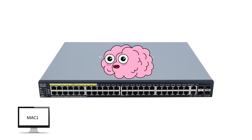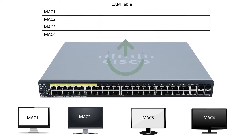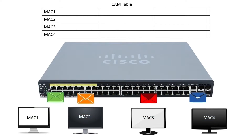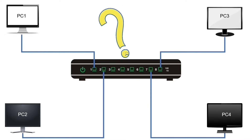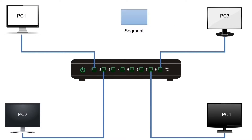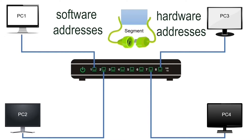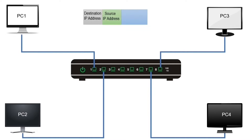In the learning phase, a switch learns the addresses of all connected devices and saves them into a table known as the CAM table, using incoming frames to learn the addresses. When a PC wants to send a data stream, it breaks the data stream into small pieces known as segments. There are two types of addresses: software addresses and hardware addresses. The device needs to attach both types to each segment.